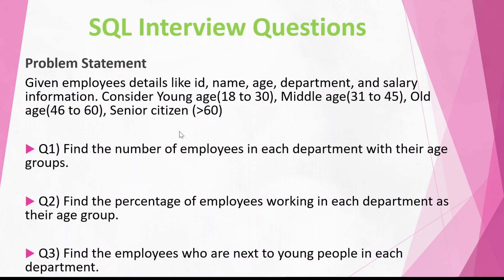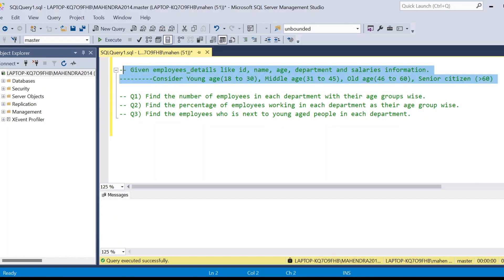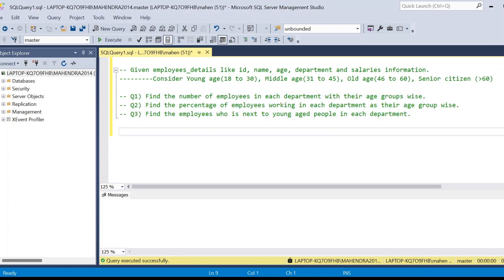The second question is: find the percentage of employees working in each department by their age group. Similarly, for the first question we found the count; here we find the percentage of employees under each age group in each department. The third and final question is: find the employees who are next to young people in each department.